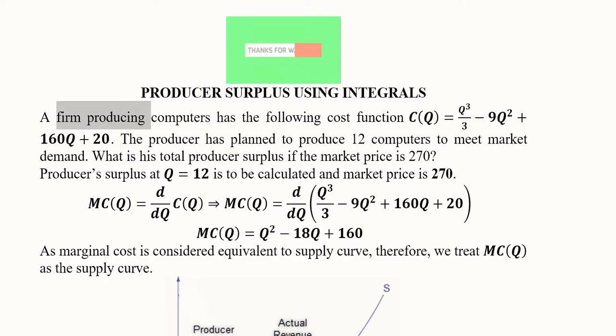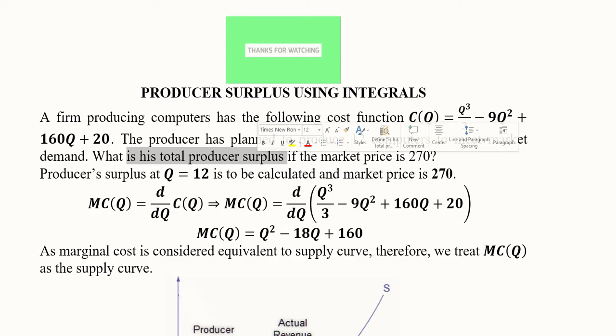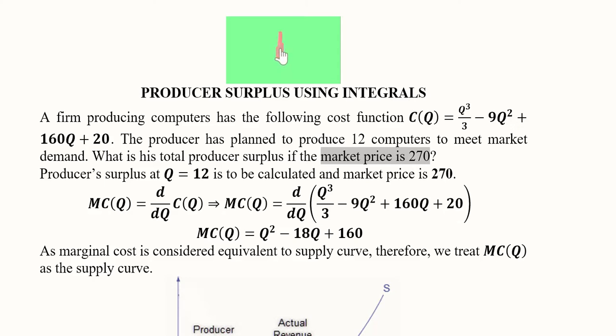Here we are considering a firm which is producing computers and it has a cost function which is as follows, and the producer has planned to produce 12 computers to meet the market demand. We are to find out the producer surplus if the market price is 270.